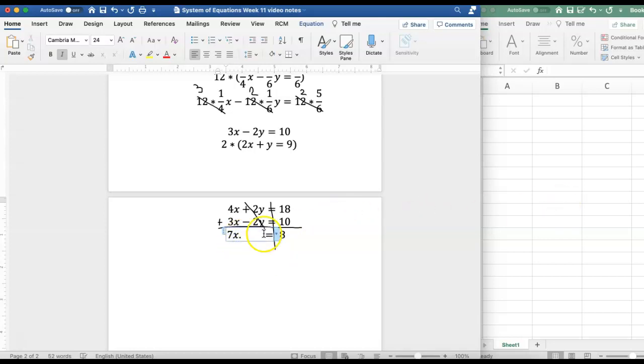And then to solve for x I just divide both sides by 7. So I have 7x equals 28 I'm going to divide by 7 on this side divide by 7 and then I'm left with on the left hand side 7 divided by 7 is 1 so I'm just left with x.